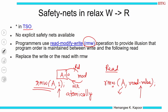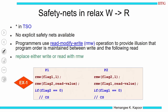For the TSO model, we are going to replace the reads and writes with the RMW. That was our program where we change the flag to 1. I am going to replace the write instruction with this RMW instruction. When an RMW is there, it will not be reordered. If the programmer uses this, this operation will provide an illusion of program order between the write and the read. I can replace either the write or the read with RMW because once an RMW is installed, it will not be reordered. That is the safety net for TSO.